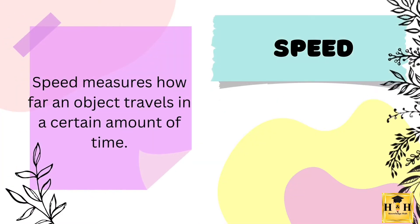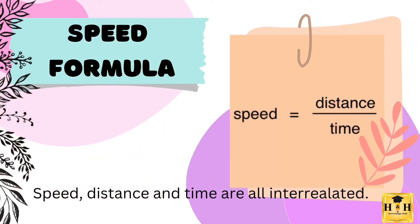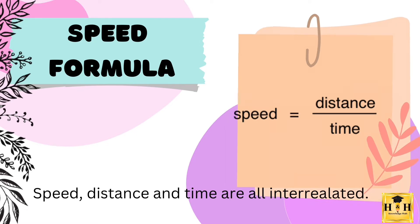Speed measures how far an object travels in a certain amount of time. The formula for speed is: speed equals distance divided by time. Speed is the magnitude of a change in position divided by a certain amount of time.